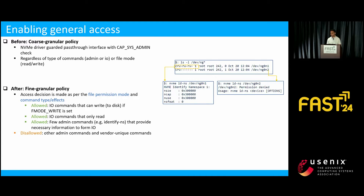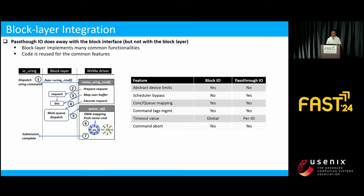Looking at the accessibility issue: the NVMe driver previously guarded the pass-through interface with a CAP_SYS_ADMIN check, done regardless of the type of command or the file mode, limiting pass-through to only the root user. What we have now is a more fine-grained policy where the access decision is made based on file permission mode, the command type, and its effect. Worth mentioning that pass-through IO does away with the block interface but not with the block layer — the NVMe driver still makes use of the block layer to implement the uring command, so the block layer code is reused.